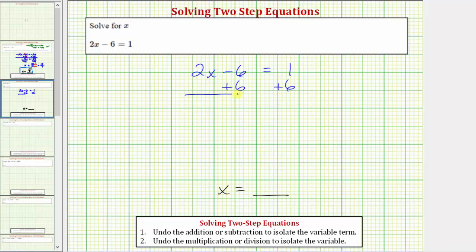Now simplifying both sides of the equation, the plus 6 undoes the minus 6, or negative 6 plus 6 equals zero. So these two terms simplify out. Now we just have the variable term 2x on the left side. So we have 2x equals, on the right side we have 1 plus 6, which equals 7.